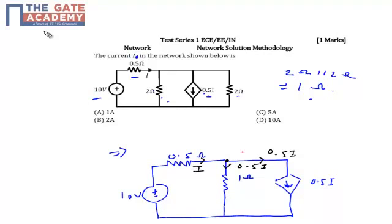To satisfy KCL at this node, the current across the 1 ohm resistor is 0.5I. Now if I apply KVL at this loop, the voltage source is 10V. In the direction of the current, we always assume the sign as plus-minus.